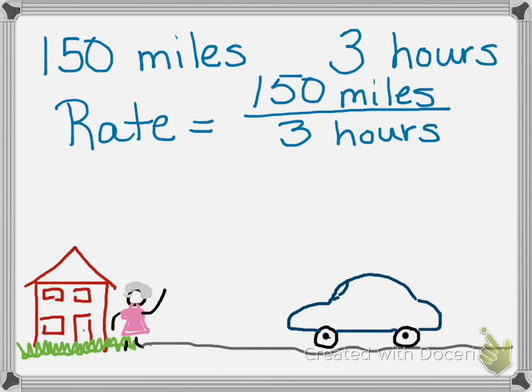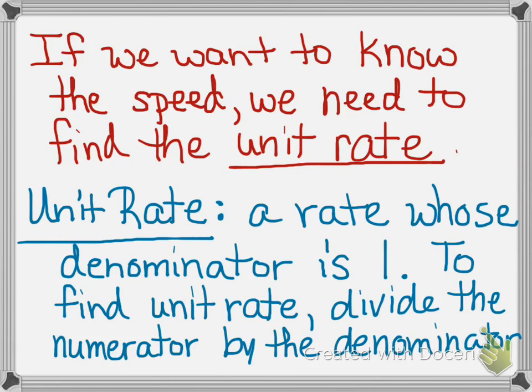Usually when we talk about how we travel, we're talking about a unit rate — we talk about our speed, which is an example of a unit rate. A unit rate is a rate whose denominator is one. So it's a rate which we've already set up, but we want to make the denominator one. In order to do this, we divide the numerator by the denominator — whatever number is on the bottom of our fraction, we divide the top and the bottom by that number. Make sure you have the definition of unit rate written in your notes.